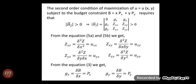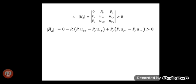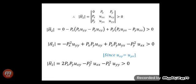Putting all this information into the bordered Hessian determinant, we get the determinant of the 3×3 matrix with entries 0, px, py; px, uxx, uxy; py, uyx, uyy, which should be greater than 0. Evaluating this determinant gives −px²·uyy + px·py·uxy + px·py·uyx − py²·uxx > 0. Since uxy = uyx, this simplifies to 2·px·py·uxy − py²·uxx − px²·uyy > 0, which is equation number 8.